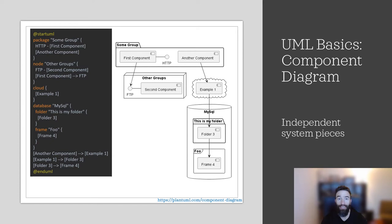Component UML diagrams depict a system broken down by components. A component is a system piece that is independently replaceable, upgradable, or purchasable. In the example, we have a sum group with two components, one linked to HTTP, another group with a component linked to an FTP that is also linked to the first component, and another component linked to the example component — connected to a SQL database. Since components are independently replaceable, we could replace the database with a different database type. Use component diagrams when you are dividing your system into components and want to show relationships through interfaces or the breakdown of components into a lower level structure.